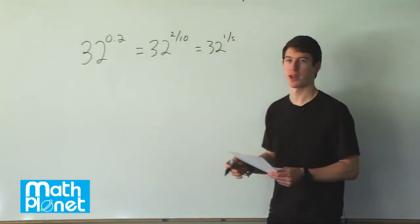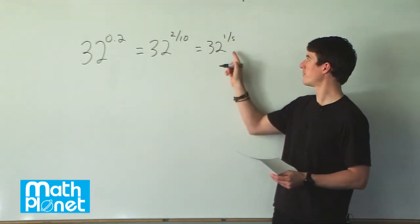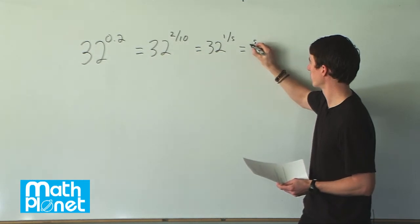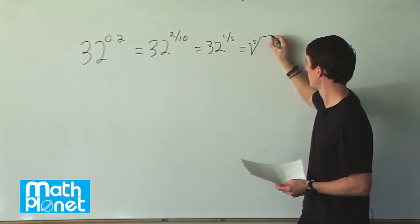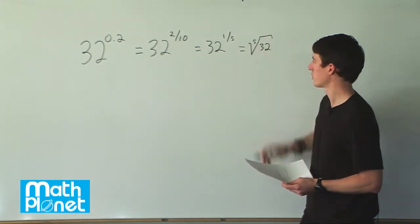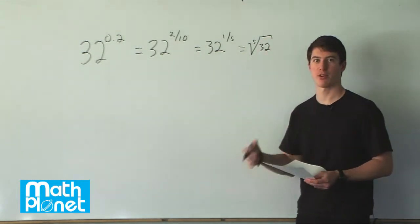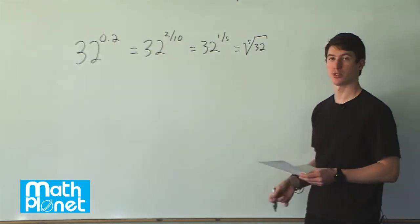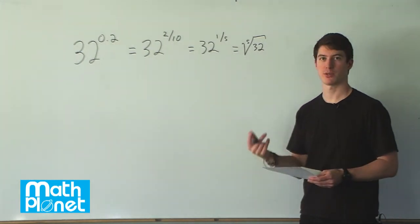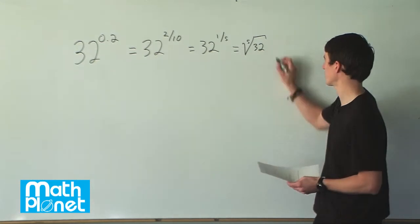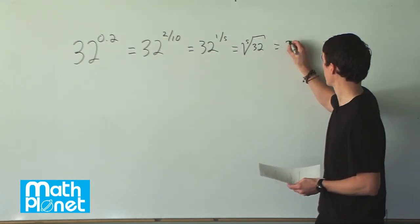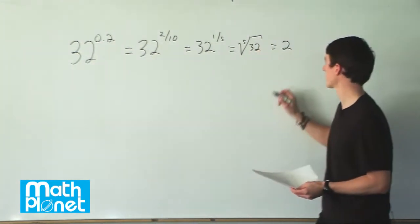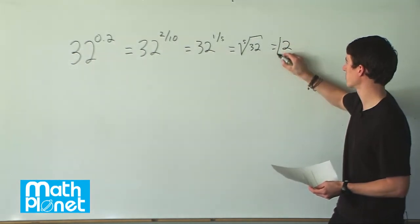This is helpful because 1 fifth is the same as the fifth root of 32. So what times itself 5 times gives us 32? Well, that's just 2 — 2 times 2 times 2 times 2 times 2 is 32. So believe it or not, this strange index here gives us a simple integer answer.